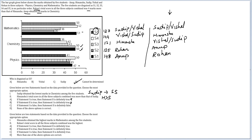If Statement 1 is false — Sudip is not S5 — is Statement 2 definitely false? In Case 1, if Sudip is S4 (144), Himanshu is less than Sudip, so Statement 2 is false. But in Case 2, if Sudip is S3 (121) and Vishal is S5, Statement 1 is false but Himanshu at 144 is greater than Sudip — Statement 2 is true. So we cannot conclude Statement 2 is definitely false when Statement 1 is false.